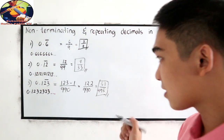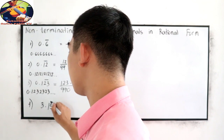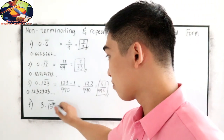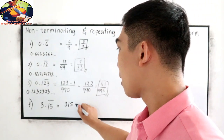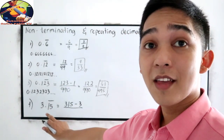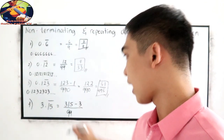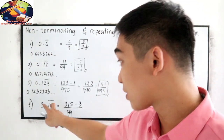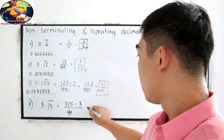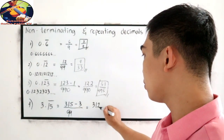Our last case, number 4. Let us say we have 3.15 with the bar on 1 and 5. Copy 3, 1, 5 — minus 3, since 3 is not included in our bar. For the denominator: we have 2 decimal places included in the bar, so we write 9, 9. That gives us 315 minus 3, which is 312, over 99.